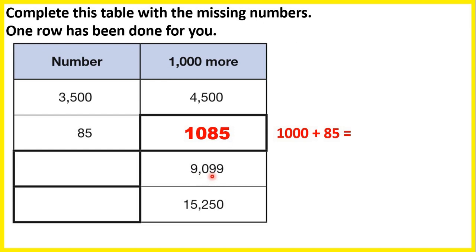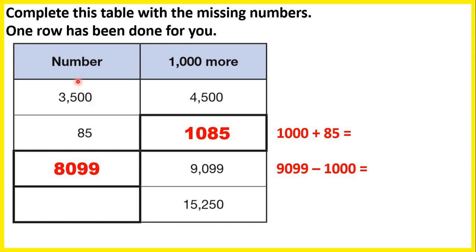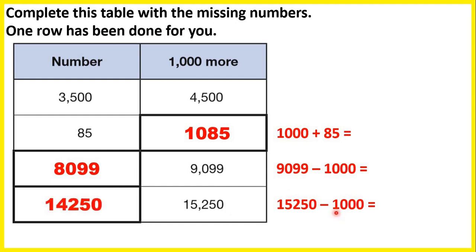Now, 9,099 is 1,000 more than which number? We need to subtract 1,000 from 9,099, so that gives us 8,099. And which number is 1,000 less than 15,250? If we subtract 1,000, we get 14,250.